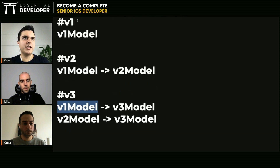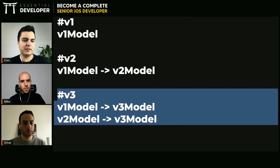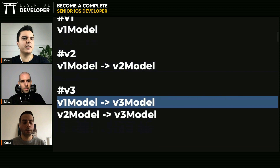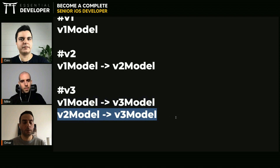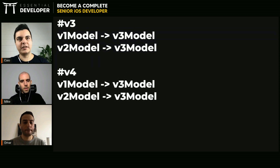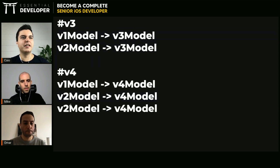Because some customers might jump from V1 to V3 directly — they might have skipped version 2 of your application. So when you are migrating and have more than one version you are still supporting, you need to create a mapping model from V1 to V3 and from V2 to V3. And if you add a V4 with a new data model, you need to create mappings from V1 to V4, V2 to V4, and V3 to V4.